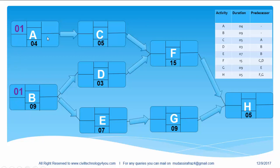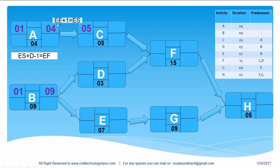What will be the early finish of this activity? The duration of this activity is 4 days so it will be finished on day 4, or you can use this equation: early start plus duration minus 1 will give you the early finish of the activity. So the early finish of activity B will be day 9. What will be the early start of the next activity? As this activity is finishing on day 4, it will start on the next day, day 5. Or you can use this equation: early finish of previous activity plus 1 will give you the early start of the next activity.